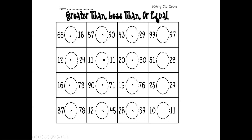99 and 97 — which is greater? 99. 99 greater than 97. Open mouth to the big number. 31 and 28 — 31 is big. So, 31 greater than 28. 23 and 29 — 23 less than 29. So, open mouth will be to 29.